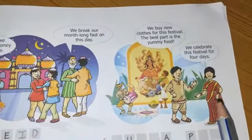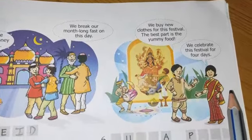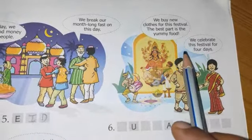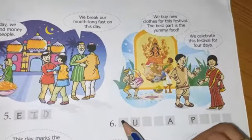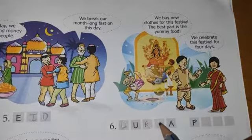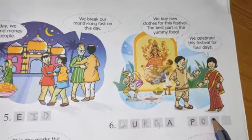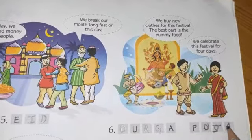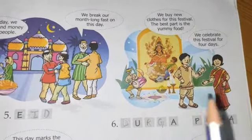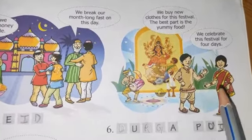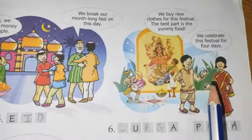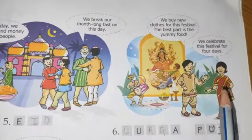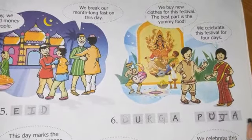The next clue: we buy new clothes for this festival; the best part is the yummy food; we celebrate this festival for four days. You can see the deity of Goddess Durga — so this is Durga Puja. The idol of Goddess Durga is kept at home or at various places, cultural activities are performed, and people go to visit these pandals. The festival is Durga Puja — D-U-R-G-A P-U-J-A.